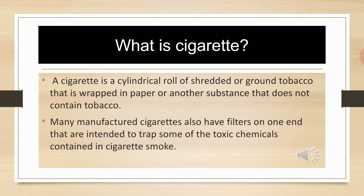What is a cigarette? Cigarettes are made of dried tobacco leaves. Tobacco leaves are the main component and cigarettes do not contain any other substance from tobacco.